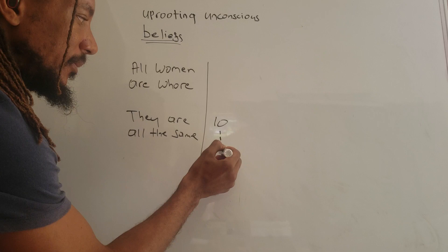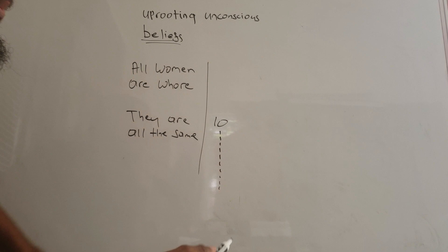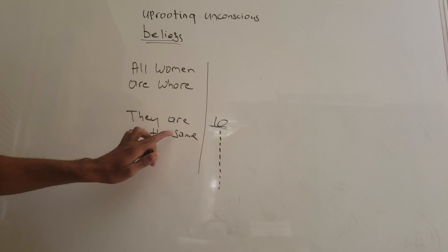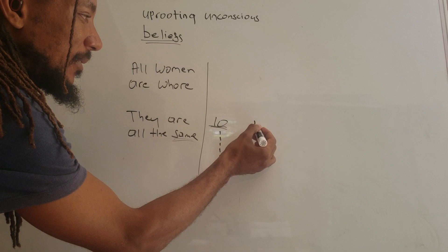If I have ten women, right, this ten is always going to be individual: one, two, three, four, five, six, seven, eight, nine, ten. The truth is they are not the same, they are not the same, they are all different.